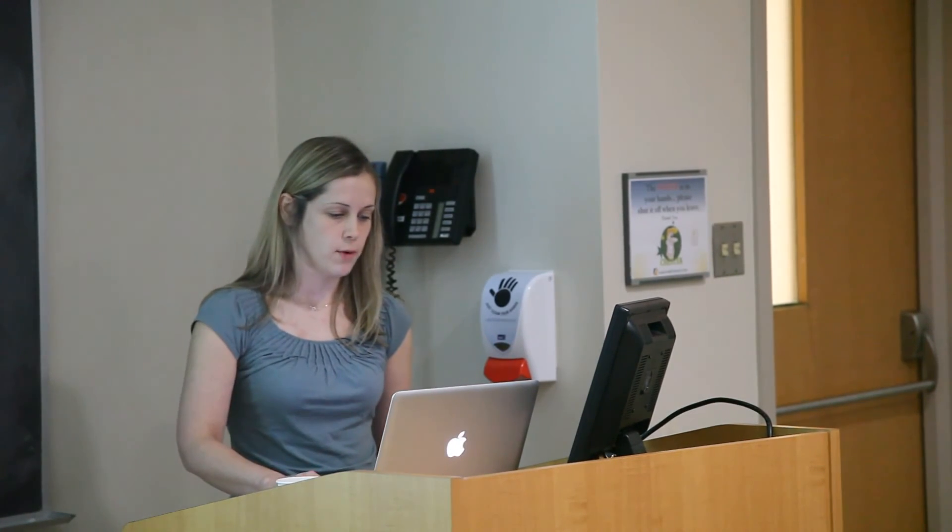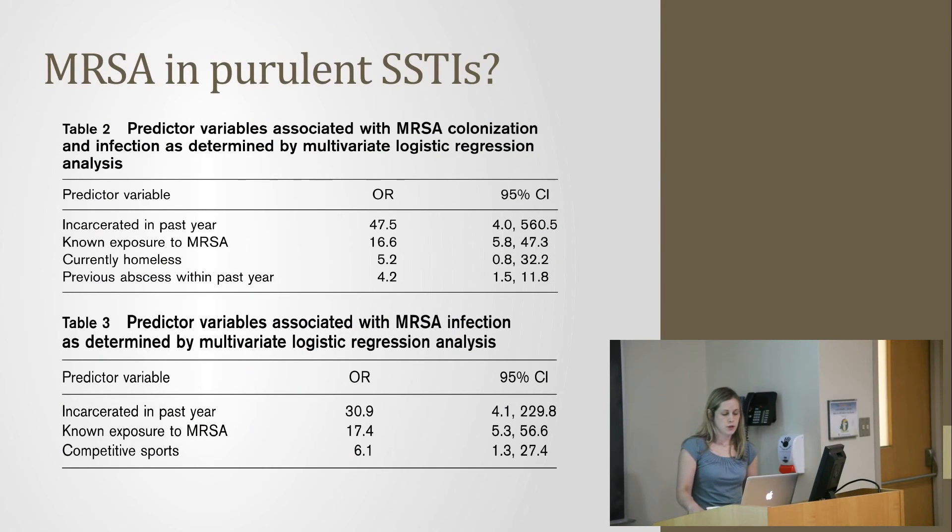It involved 205 patients and they defined colonization and infection. Colonization was people who had nares or throat cultured for MRSA. Infection was infection sites cultured for MRSA. They found predictor variables associated with MRSA infection and colonization. In summary, incarceration in the past year, known exposure to MRSA, competitive sports, homelessness, and previous abscess in the past year were associated with MRSA colonization or infection. MRSA was the only organism isolated in 22% of purulent skin and soft tissue infections. Overall, about 17% of patients were colonized or infected with MRSA.